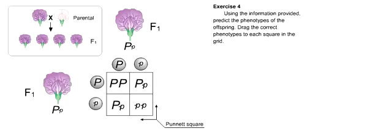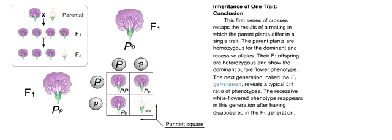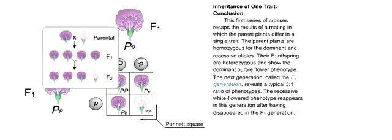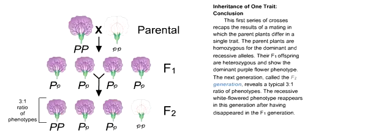Using the information provided, predict the phenotypes of the offspring. Drag the correct phenotypes to each square in the grid. This first series of crosses recaps the result of a mating in which the parent plants differ in a single trait. The parent plants are homozygous for the dominant and recessive alleles. Their F1 offspring are heterozygous and show the dominant purple flower phenotype. The next generation, called the F2 generation, reveals a typical 3 to 1 ratio of phenotypes. The recessive white flowered phenotype reappears in this generation after having disappeared in the F1 generation.